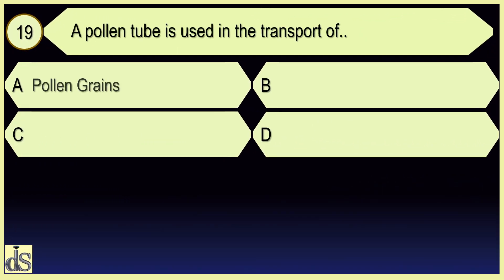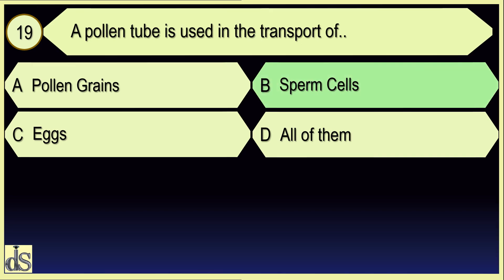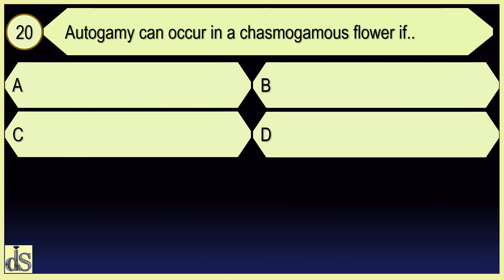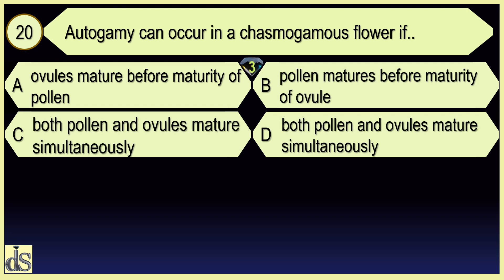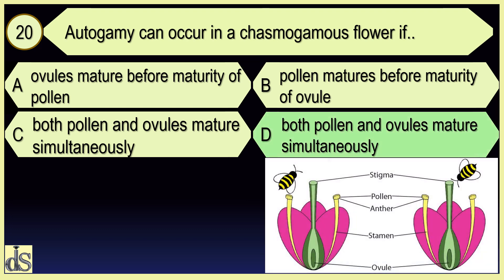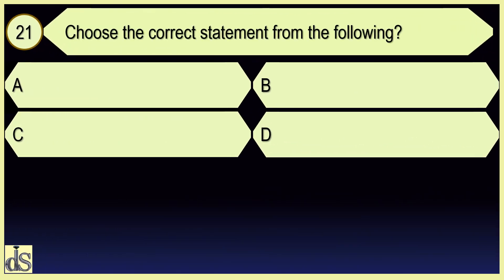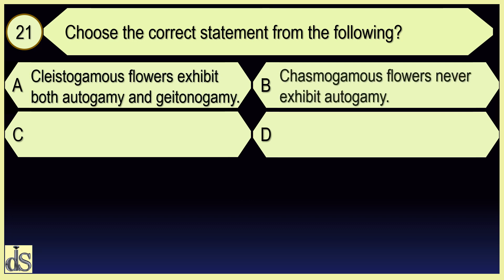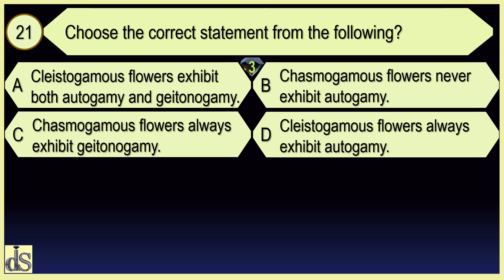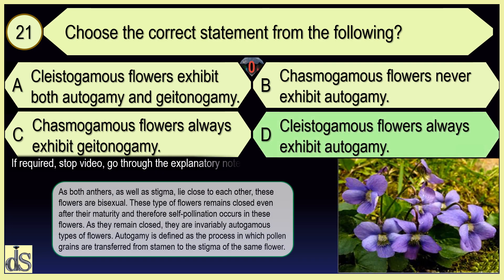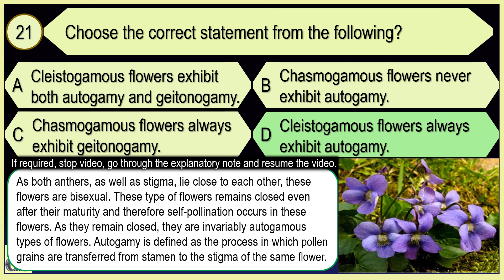A pollen tube is used in the transport of sperm cells. Autogamy can occur in a chasmogamous flower if both pollen and ovules mature simultaneously. Choose the correct statement from the following: chasmogamous flowers always exhibit autogamy.